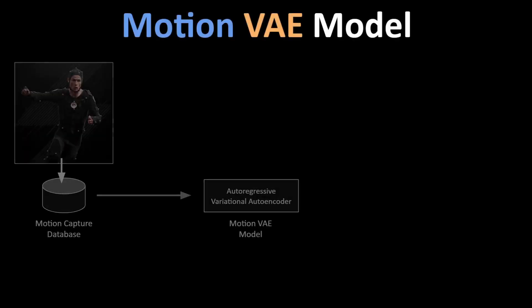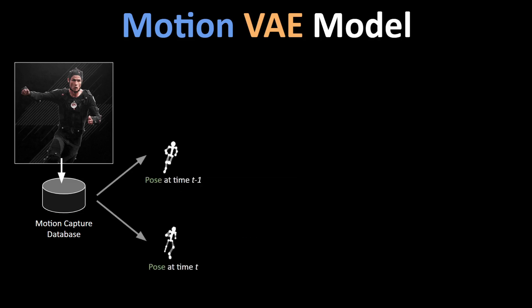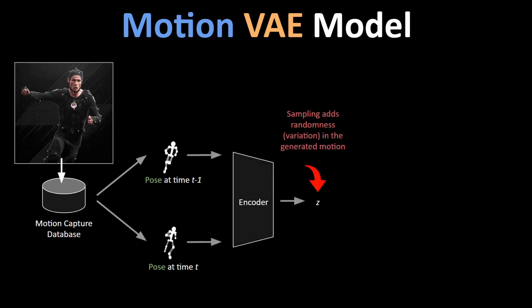It does so by training an autoregressive encoder-decoder model on motion capture data. It is autoregressive because it uses previous poses to reconstruct the current pose. The pose encoder outputs a latent from which we draw a latent variable z, that is used to add slight variations in our reconstruction.